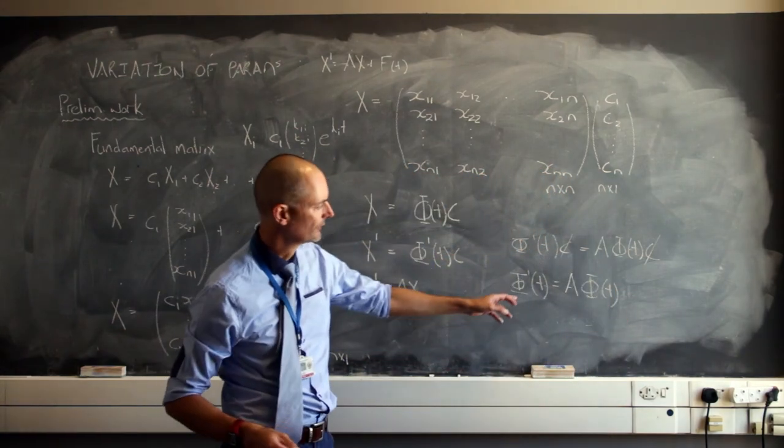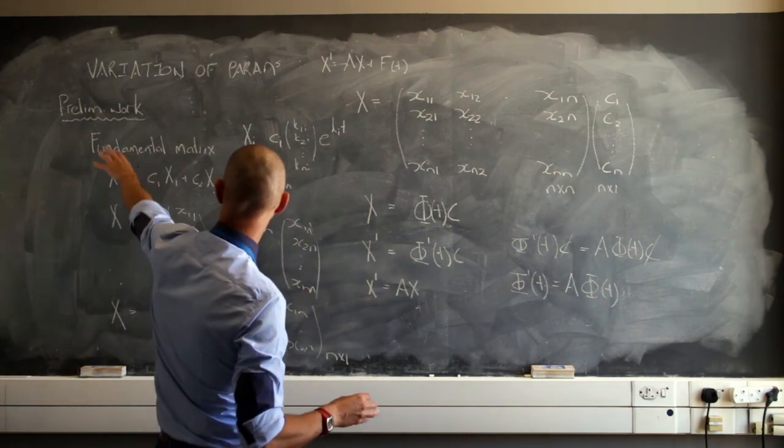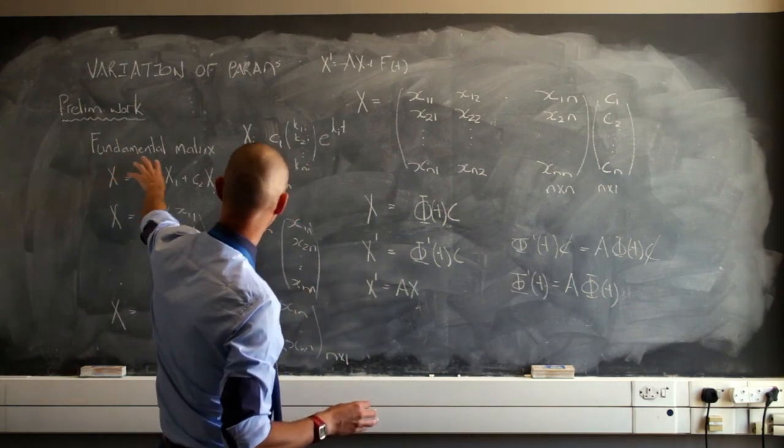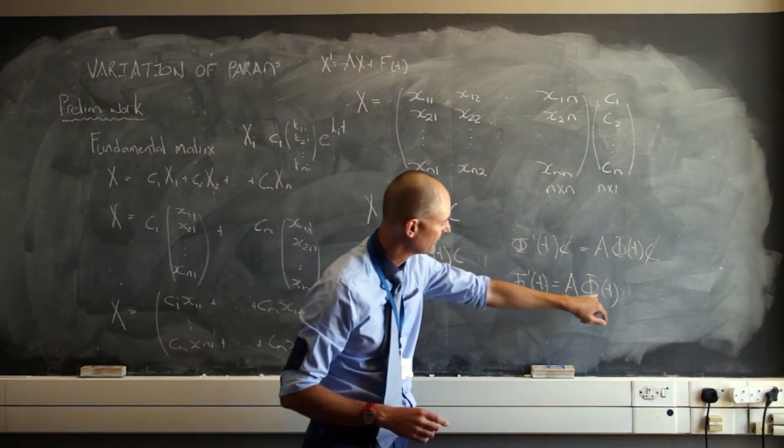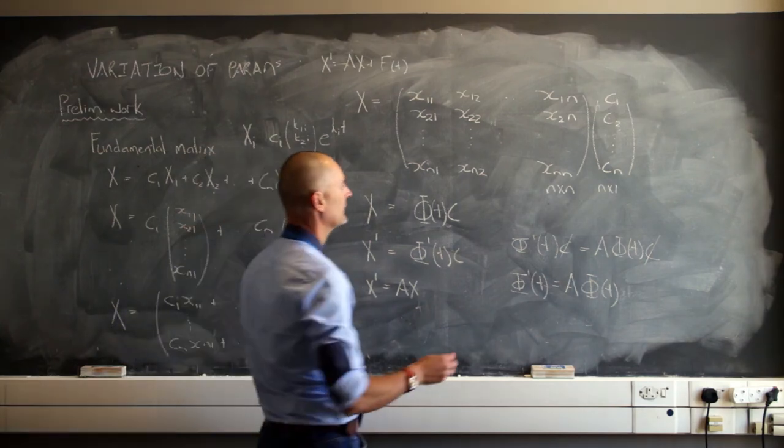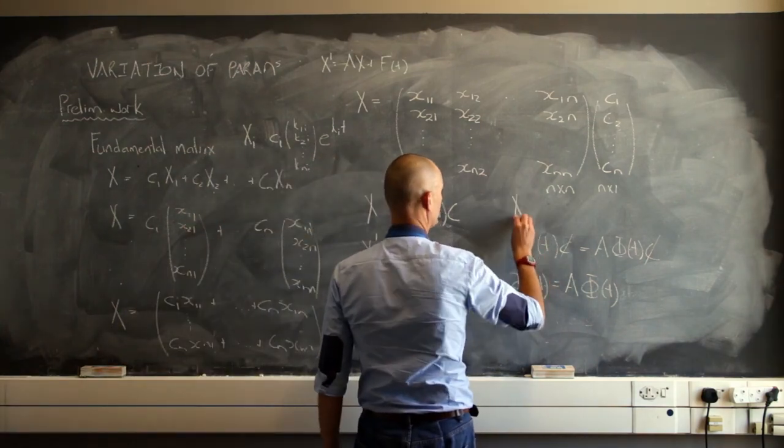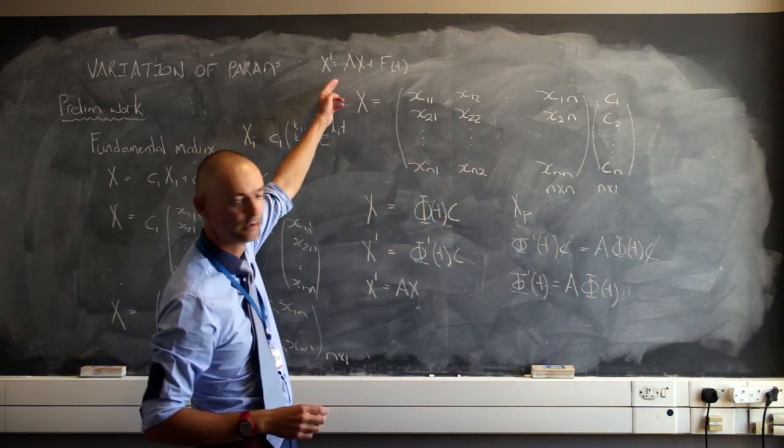So the c's can go, and I have the fact that the prime of this fundamental matrix is just my original matrix a times phi of t. And that we're going to use. This is the first part of our preliminary work. We're using this fundamental matrix and the fact that its first derivative equals a times itself, and we're going to use that to set up an equation to get the particular solution of a non-homogeneous problem.